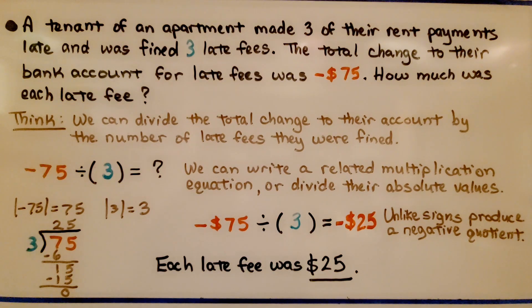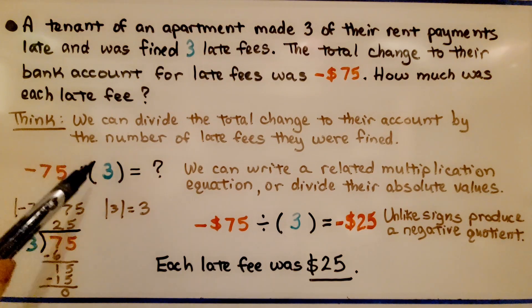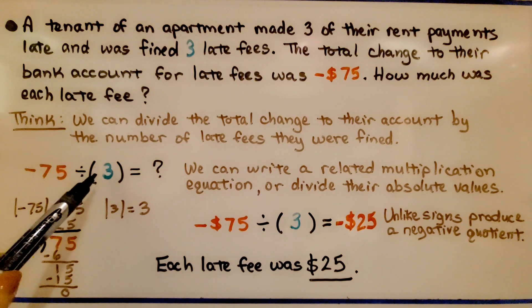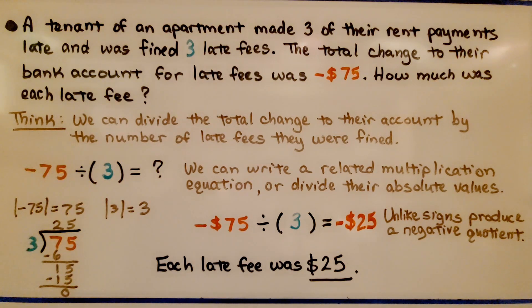We think we can divide the total change to their account by the number of late fees they were fined. We have negative 75 divided by the 3 late fees. We can write a related multiplication equation or we can divide their absolute values. We have 75 divided by 3. That's 25.